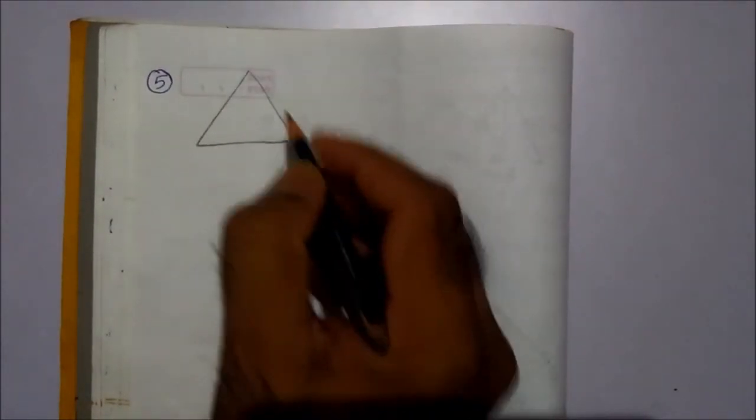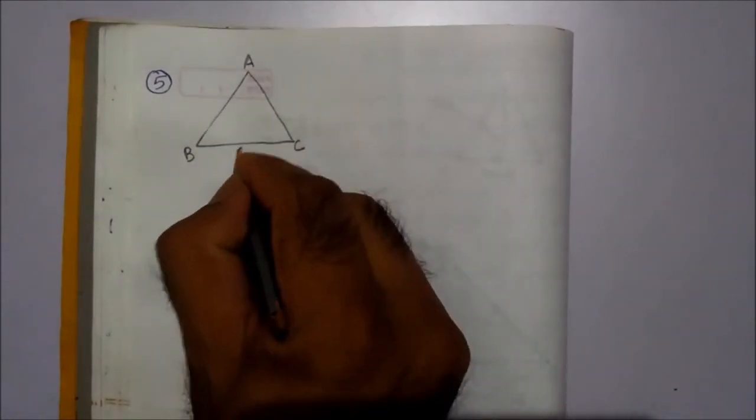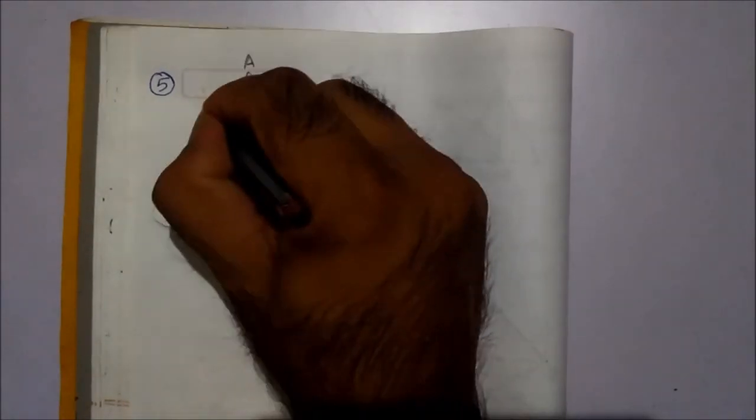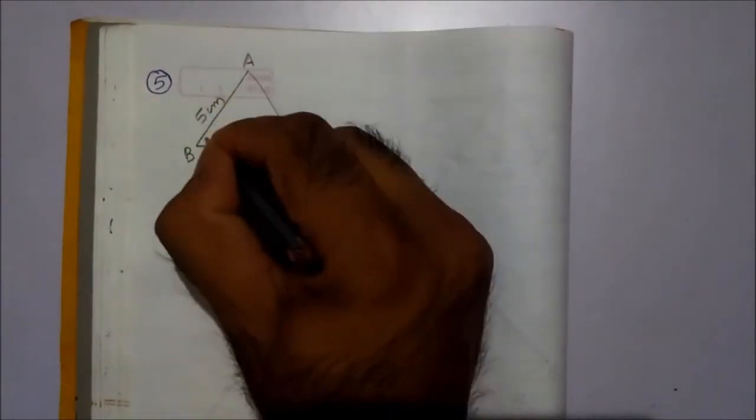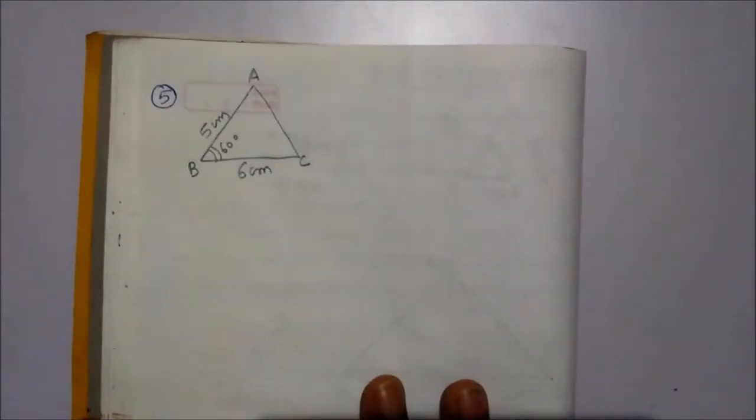Exercise 11.15, some rough diagram. We have to draw triangle ABC, where BC is 6 cm, AB is 5 cm, and the angle B is given 60 degrees. This is our original triangle.